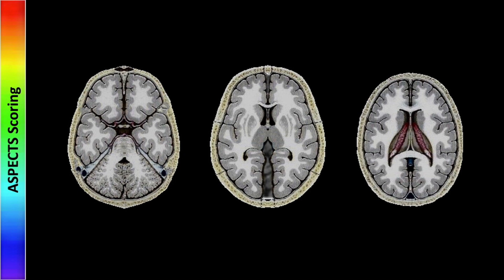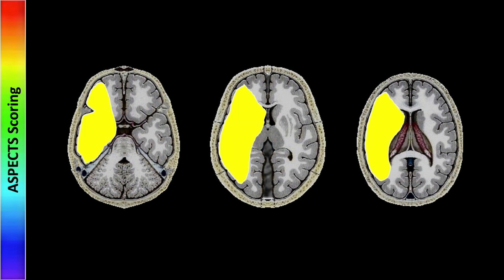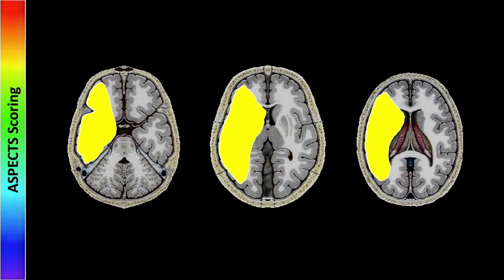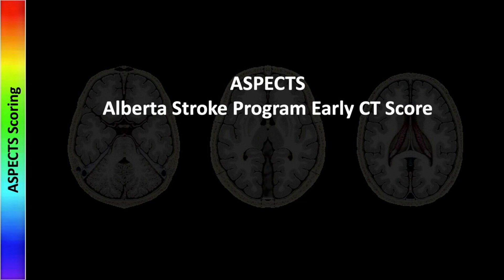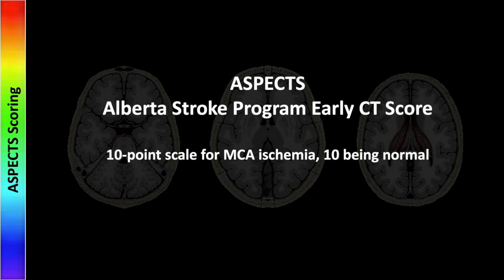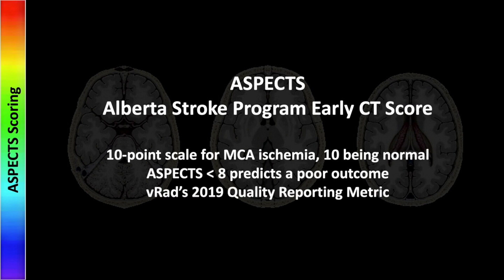Let's proceed with ASPECTS scoring. ASPECTS scoring is applied to middle cerebral artery ischemic events, so those regions of the brain supplied by the middle cerebral artery are those under consideration. ASPECTS stands for the Alberta Stroke Program Early CT Score. It is a 10-point scale for MCA ischemia, with 10 being a normal score. ASPECTS scores of less than 8 predict a poor outcome, and this was actually one of VRAD's 2019 quality reporting metrics, showing how widespread the request for ASPECTS scoring on all ischemia-related head CT reports has become.